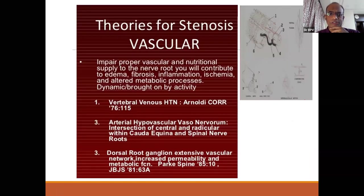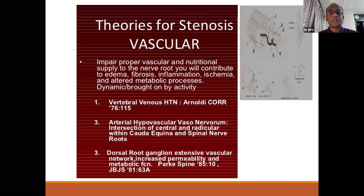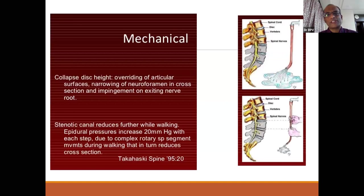There are two components in the theory of stenosis: vascular and mechanical. The vascular component involves compromise of nutritional supply and vasculature to the nerve root due to edema, inflammation, ischemia, altered metabolic processes, and ultimately fibrosis. The mechanical component includes disc height collapse, cauliflower-like arthritic joints intruding into the canal — especially the lateral recess and foramen — and neural foramen narrowing causing impingement of the exiting or traversing root.